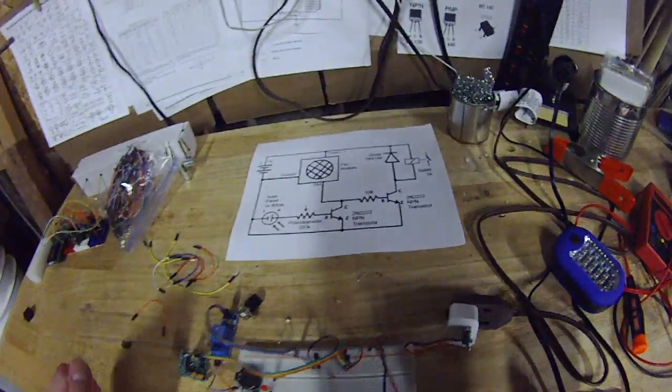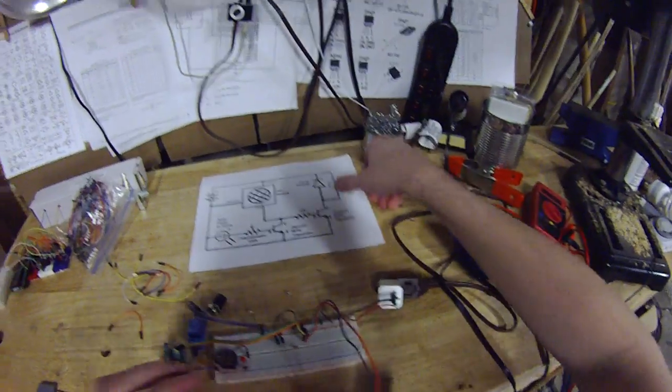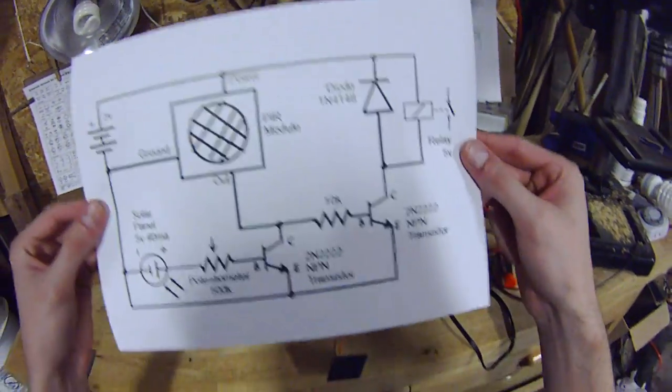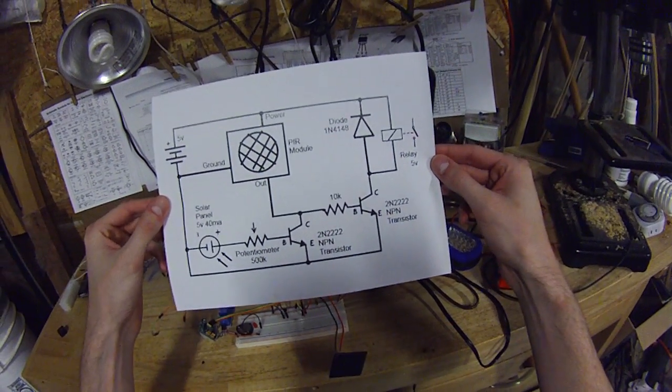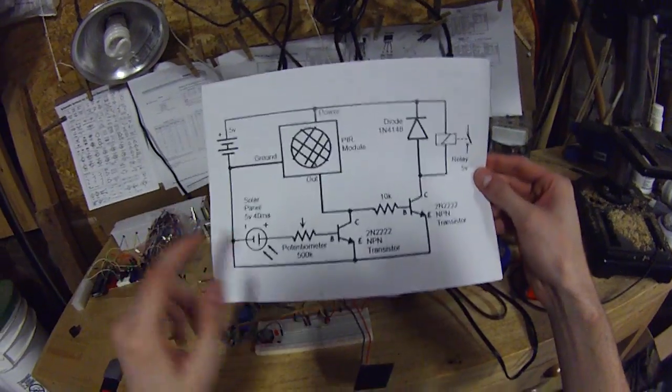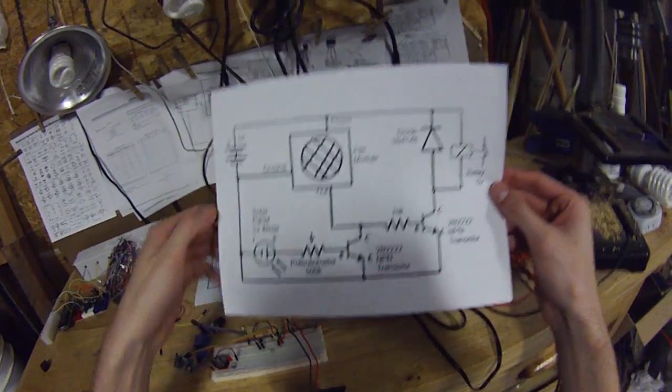So turn that back off. Now let me give you the close-up on this real quick. So you can print that out if you need to. There we go. Oh, the ground side of the solar panel just goes into the ground of your circuit.